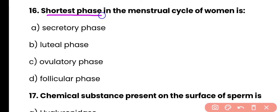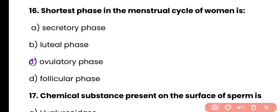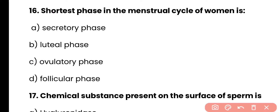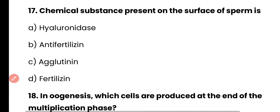Question 16: The shortest phase in the menstrual cycle of women is — secretory phase, luteal phase, ovulatory phase, or follicular phase? Correct answer is option C. The ovulatory phase is the shortest phase of the menstrual cycle, while the secretory phase is the longest.